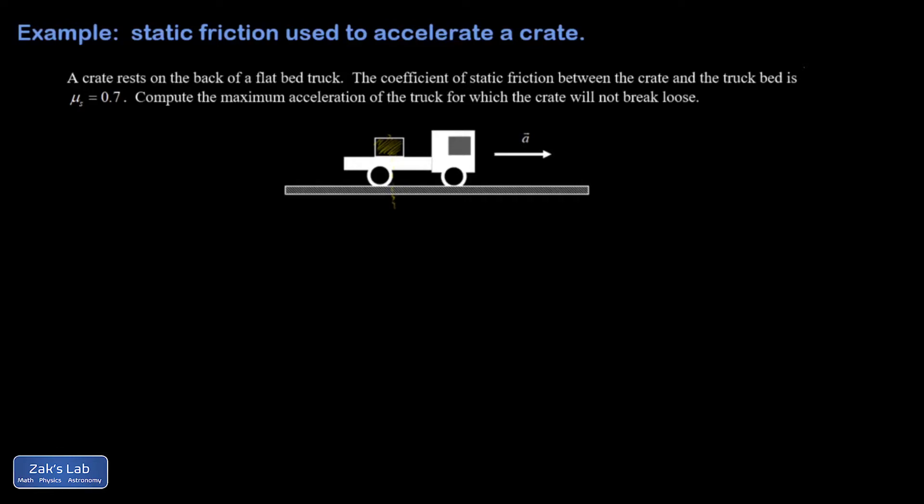So that parallel force of friction must be pointing to the right on the crate, and that's a static friction force, and the force of gravity is pointing down on the crate. We're not given a mass, so I assume that will cancel out, and I'm just going to call that mg. And then there's a normal force pointing up.